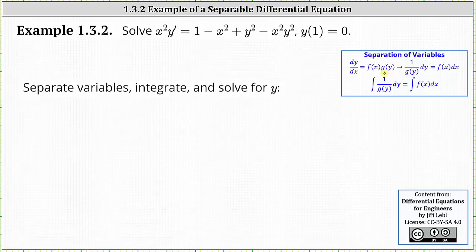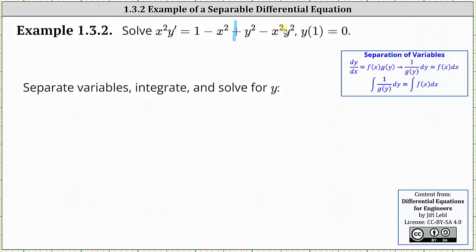Because there are four terms on the right side, we will factor using factor by grouping: we factor the greatest common factor from the first two terms, then the greatest common factor from the second two terms, and hopefully obtain a common binomial factor. The only common factor between one and x squared is one, so we factor one from one minus x squared. The greatest common factor between y squared and x squared y squared is y squared, so we factor y squared from the second two terms.